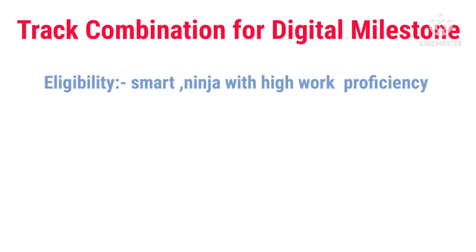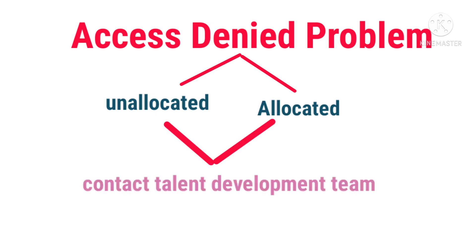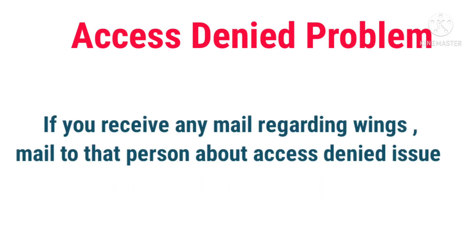Next, I will tell you the track combination for Digital Milestone. The eligible criteria of Digital Milestone is Smart and Ninja with high work profession. A lot of members are facing an Access Denied problem — some members are unallocated, which is why this problem occurs. If you are unallocated and face this issue, contact the Talent Development team. If you received any mail regarding TSLP Wings, contact that person in Teams or mail them about this issue and they will solve your problems.